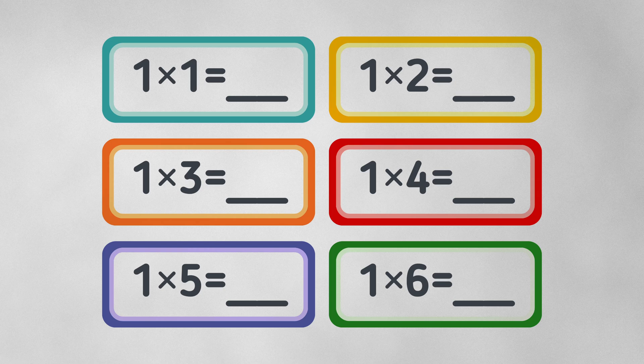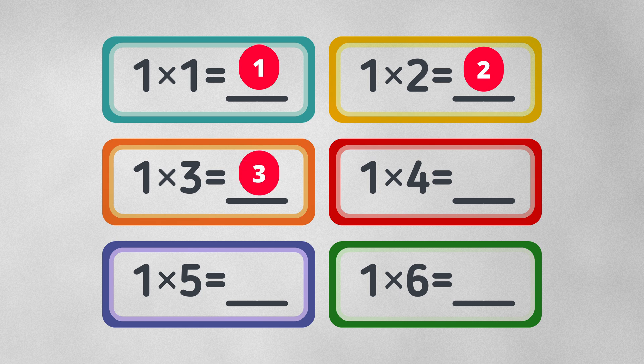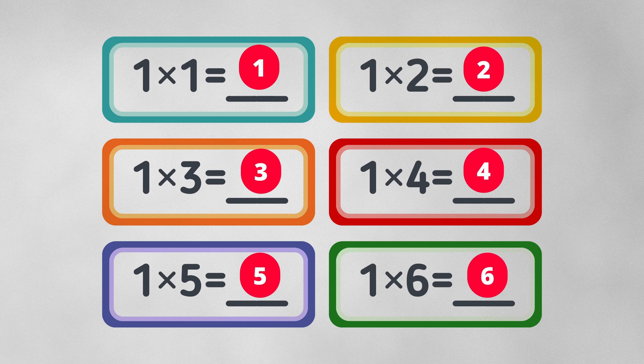Multiplication table. 1 times 1 equals 1. 1 times 2 equals 2. 1 times 3 equals 3. 1 times 4 equals 4. 1 times 5 equals 5. 1 times 6 equals 6.